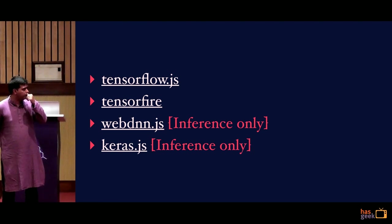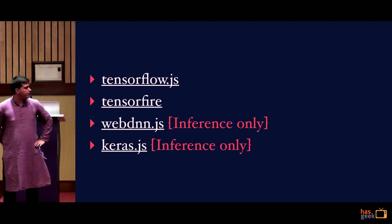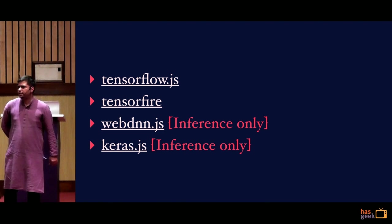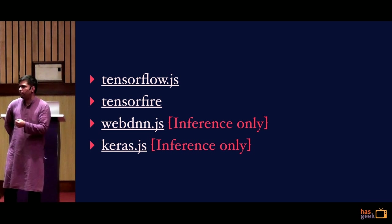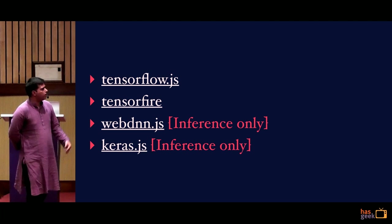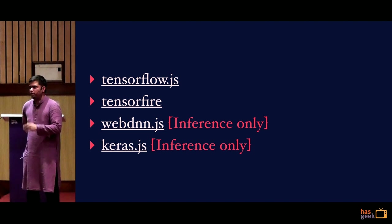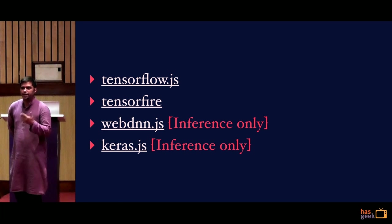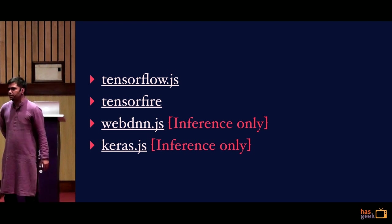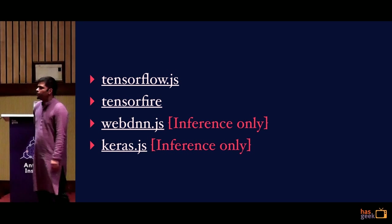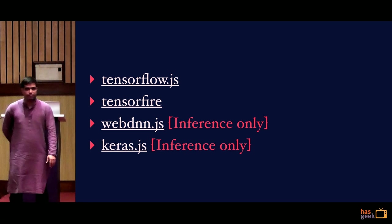There's also WebDNN, which is compiled to WASM — compiled closer to C code and running on the browser — giving much better performance. If you want to use it for inference only, you can use WebDNN. There are also wrappers for inference on top of Keras or MXNet — Keras.js and MXNet also has a JS implementation. But they are all inference-only at the lower part, meaning you can run model inference but you can't really run training on the browser.